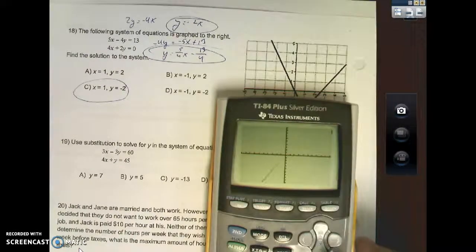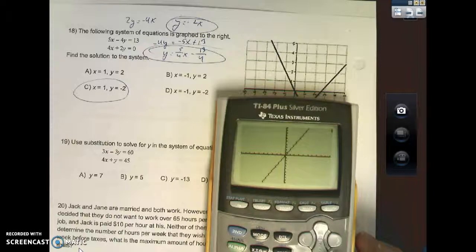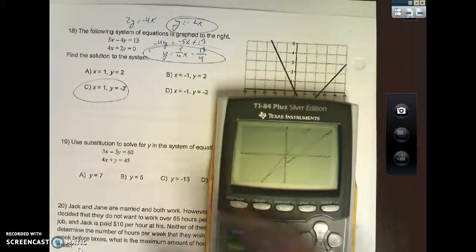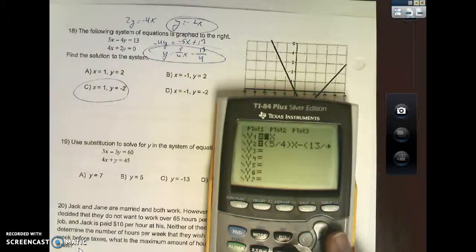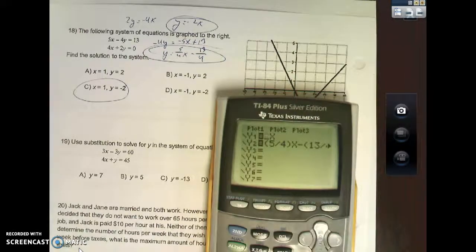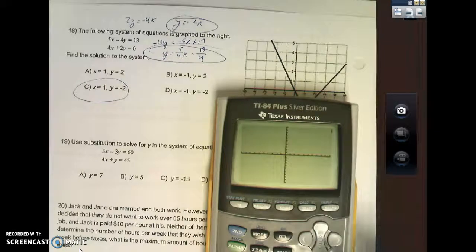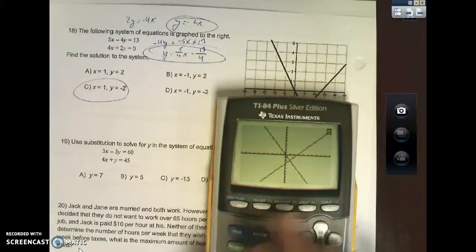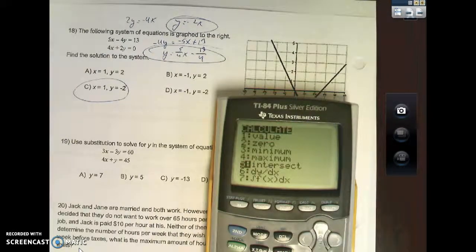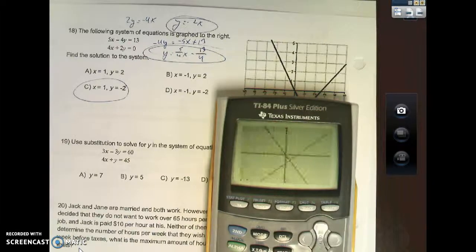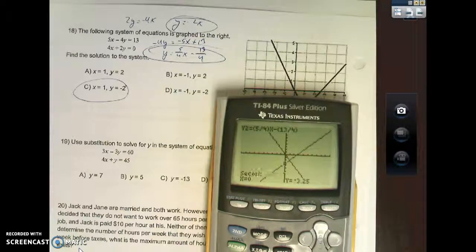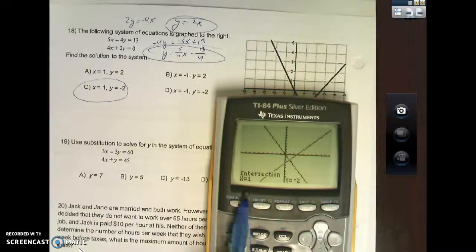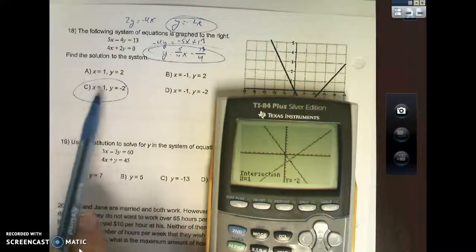Now check this out. I go to y equals. I type in these two equations. y equals 5/4x minus 13 over 4, and y equals -2x. I hit graph. Now you'll notice that I can see both graphs. They intersect there. I typed something in wrong. Oh, it's negative 2x. Much better. What you can do next is you can hit second trace, go down to intersect. Hit enter four times: 1, 2, 3, 4. That gives us 1, negative 2. I will gladly show this to you guys more when we get back after our break.